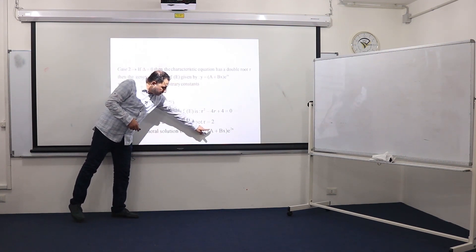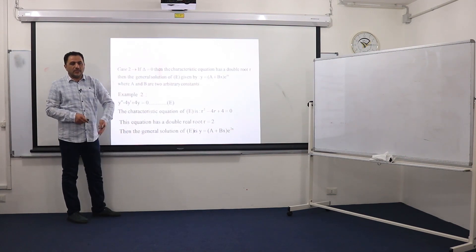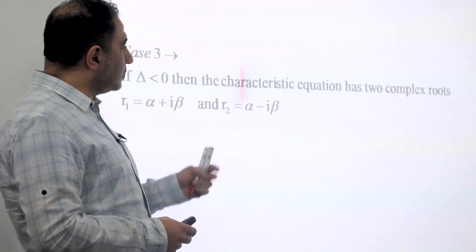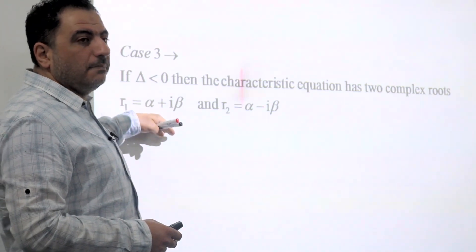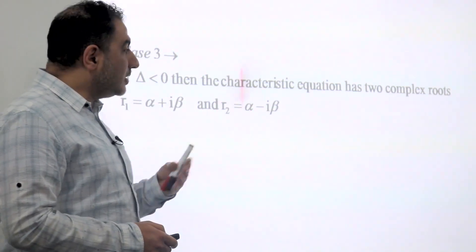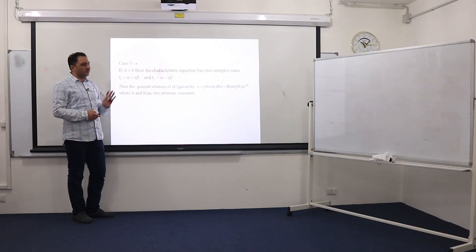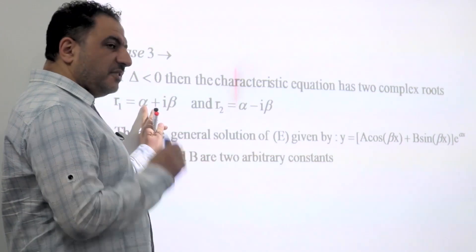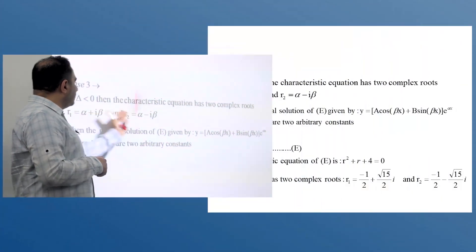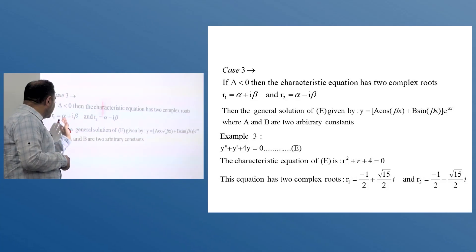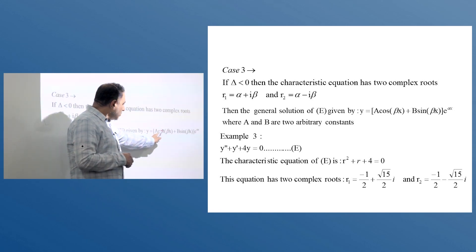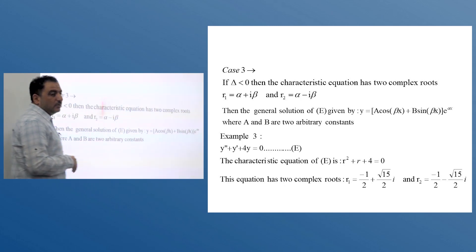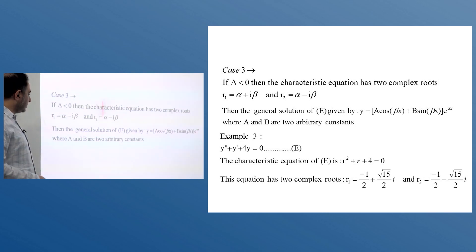A and b are two arbitrary constants. If we need to find a and b, we need two extra pieces of information. Case 3: if delta is negative, the characteristic equation has two complex roots — r1 = α + iβ and r2 = α - iβ. The general solution is: y = e^(αx) · [a·cos(βx) + b·sin(βx)]. Don't be afraid of this formula — it's very simple. Find one of the roots, pick α and β, and plug them into the formula.